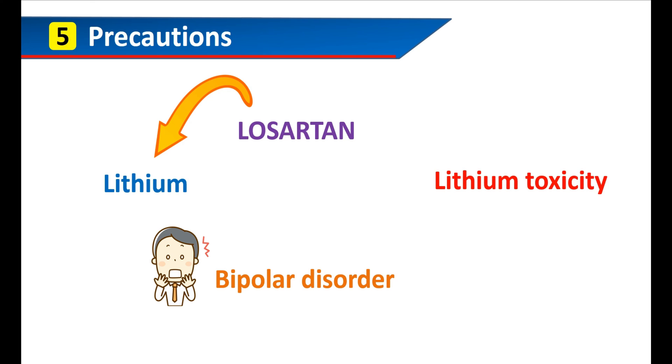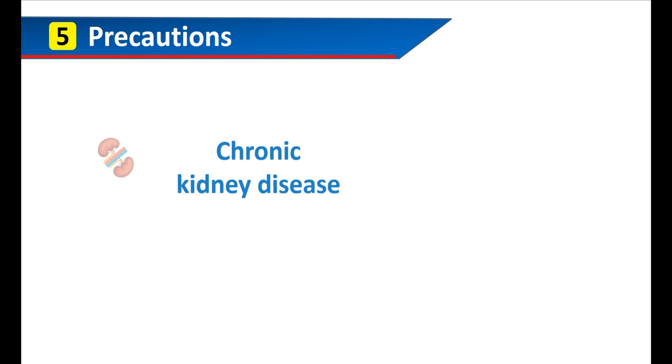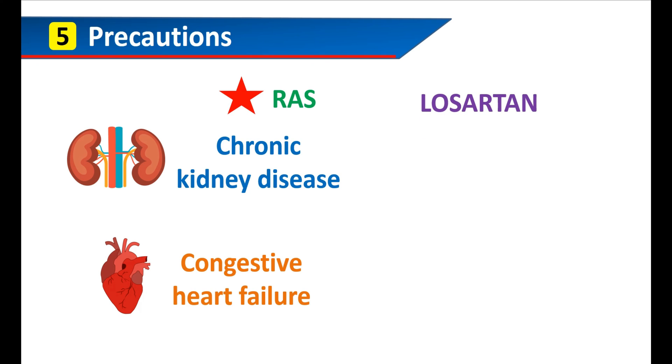In people with chronic kidney disease, congestive heart failure, or any other condition like renal artery stenosis, the role of the renin-angiotensin system is highly essential. In such people, Losartan can reduce the function of the renin-angiotensin system by blocking the actions of angiotensin 2.